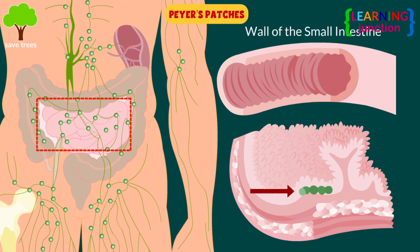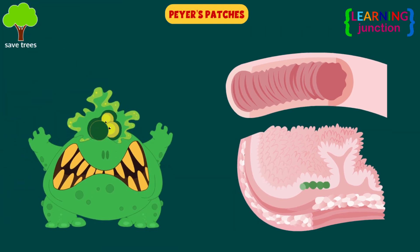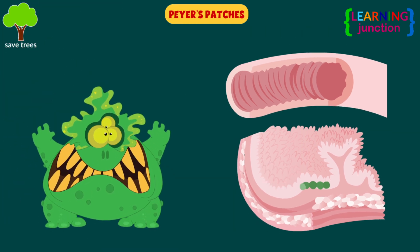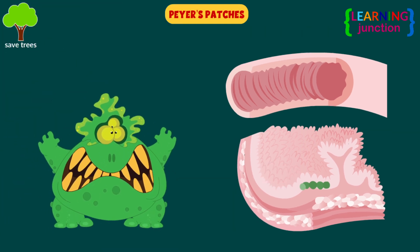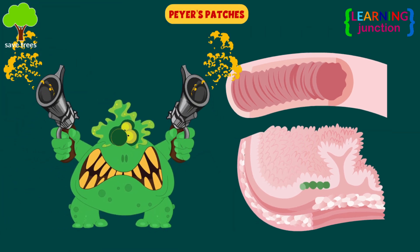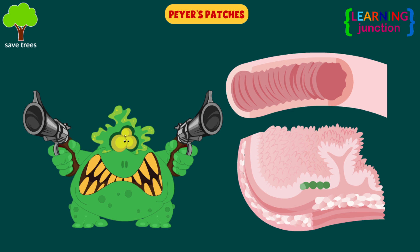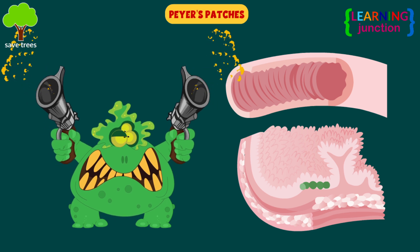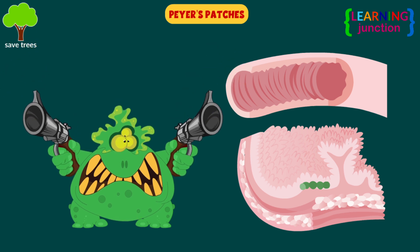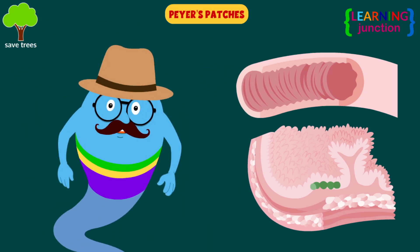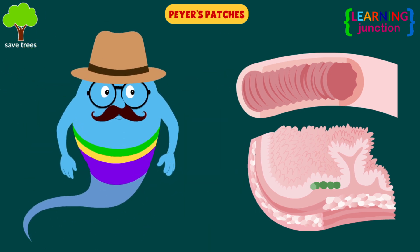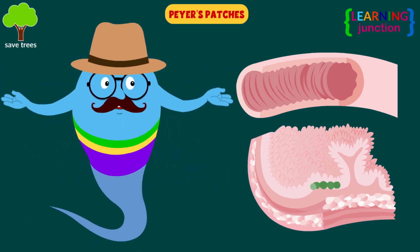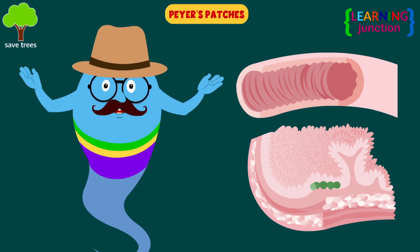Peyer's patches are found in the wall of the small intestine. The macrophages of Peyer's patches are in an ideal position to capture and destroy bacteria, thereby preventing them from penetrating the intestinal wall.